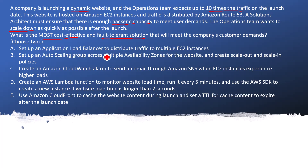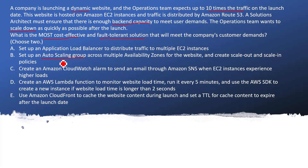Option A: Set up an Application Load Balancer to distribute the traffic to multiple EC2 instances. The Application Load Balancer can help balance the load and also perform health checks on EC2 instances. Option B: Set up an Auto Scaling Group across multiple Availability Zones for the website and create scale-out and scale-in policies. This looks correct because using the managed configuration policies of Auto Scaling Group, you can easily scale up and scale down whenever you need to handle traffic.